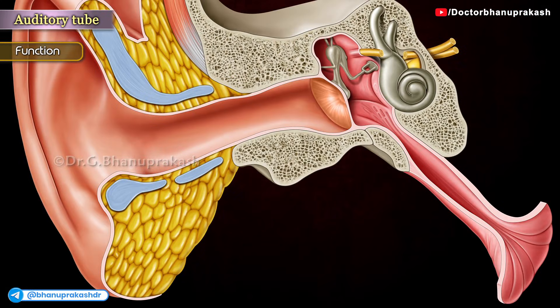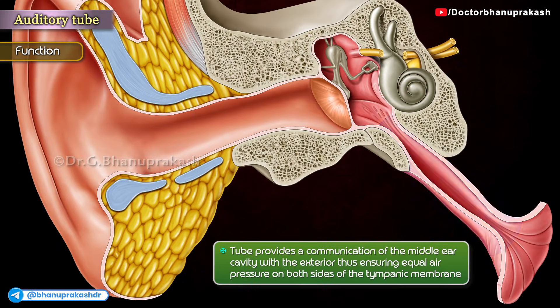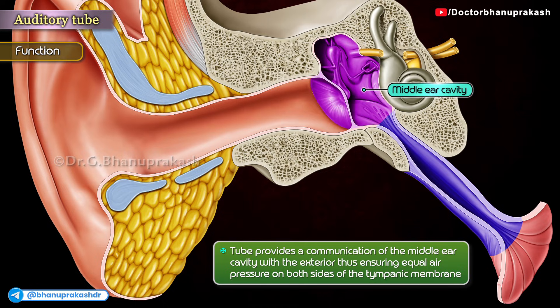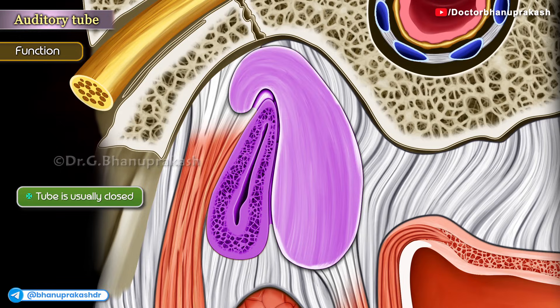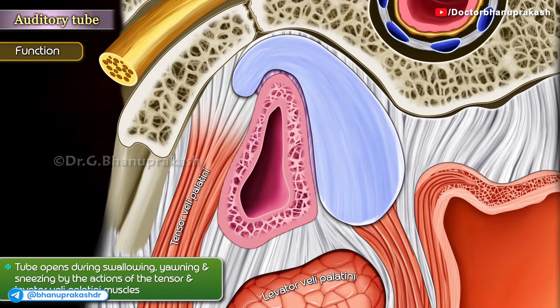Function: The tube provides a communication of the middle ear cavity with the exterior, thus ensuring equal air pressure on both sides of the tympanic membrane. The tube is usually closed, but opens during swallowing, yawning, and sneezing, by the actions of the tensor and levator veli palatini muscles.